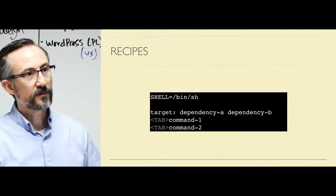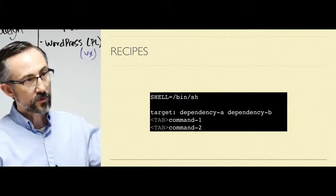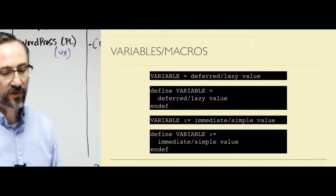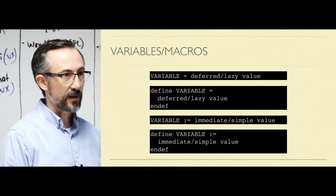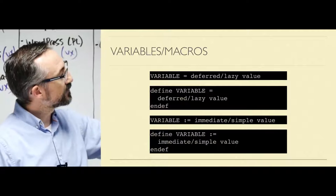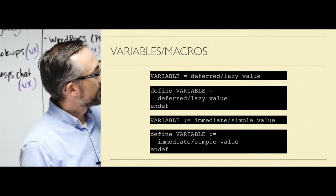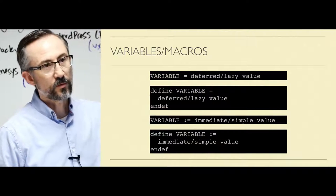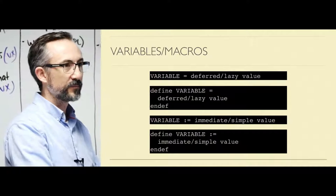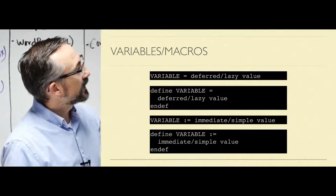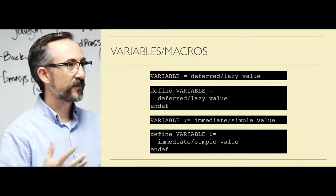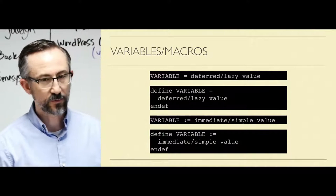We've talked about the Make file format specifically — rules, targets, dependencies, and recipes. Now we'll talk briefly about variables or macros. They're the same thing to Make. There are two flavors of variables in Make: deferred (lazy) variables and immediate (simple) variables. The top two are lazy and the bottom two are immediate. An immediate variable uses the colon-equal operator. That tells Make: when you see this declaration, look at the value as it exists right now — that is what will be inside the variable. In a lazy variable, the variable value is not evaluated until it's used. Both of these have good uses.